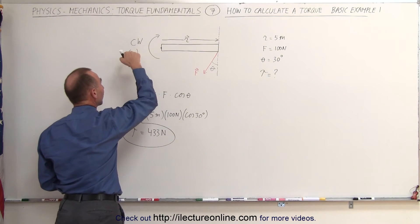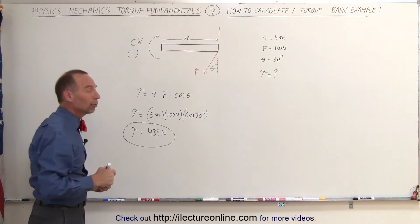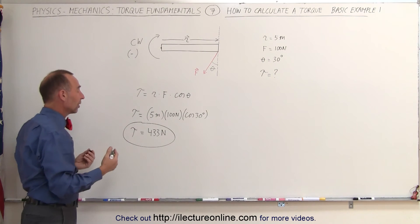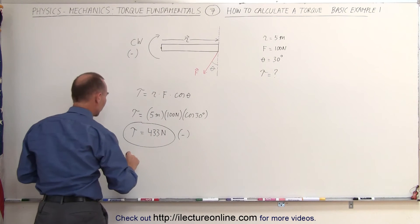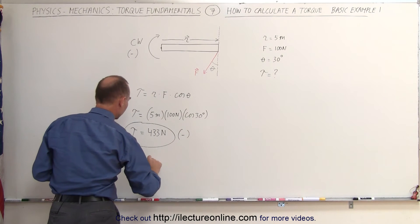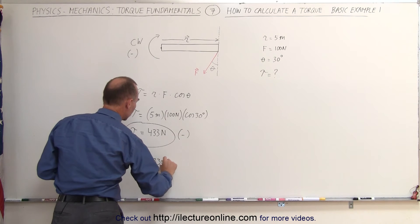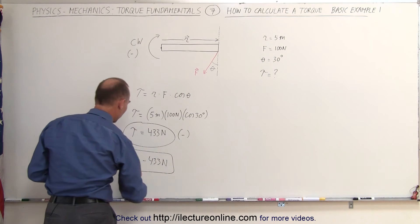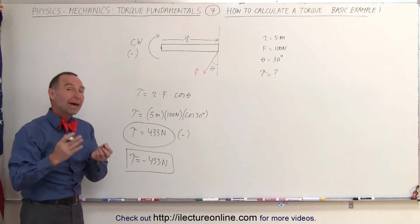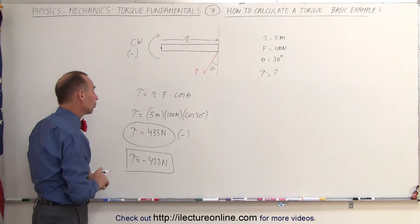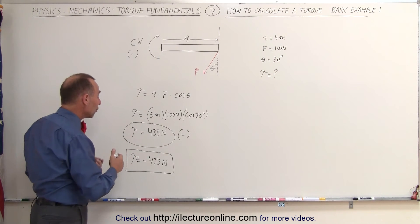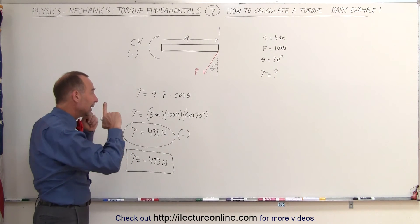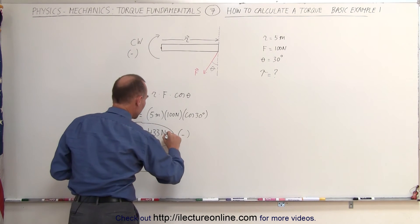The direction is clockwise, so it will be negative 433. When you write it like this, you simply say the magnitude of the torque is 433. If you write it with the negative sign, you're making it into a vector quantity. But I'm missing something - the units should be newton meters.